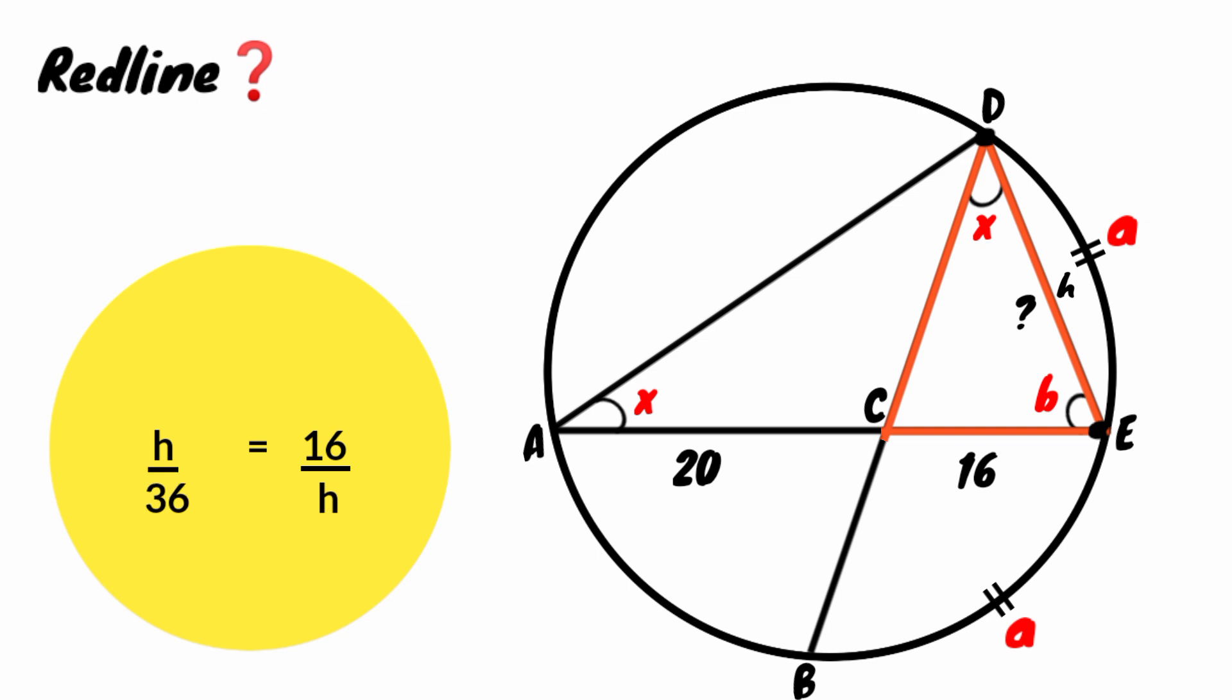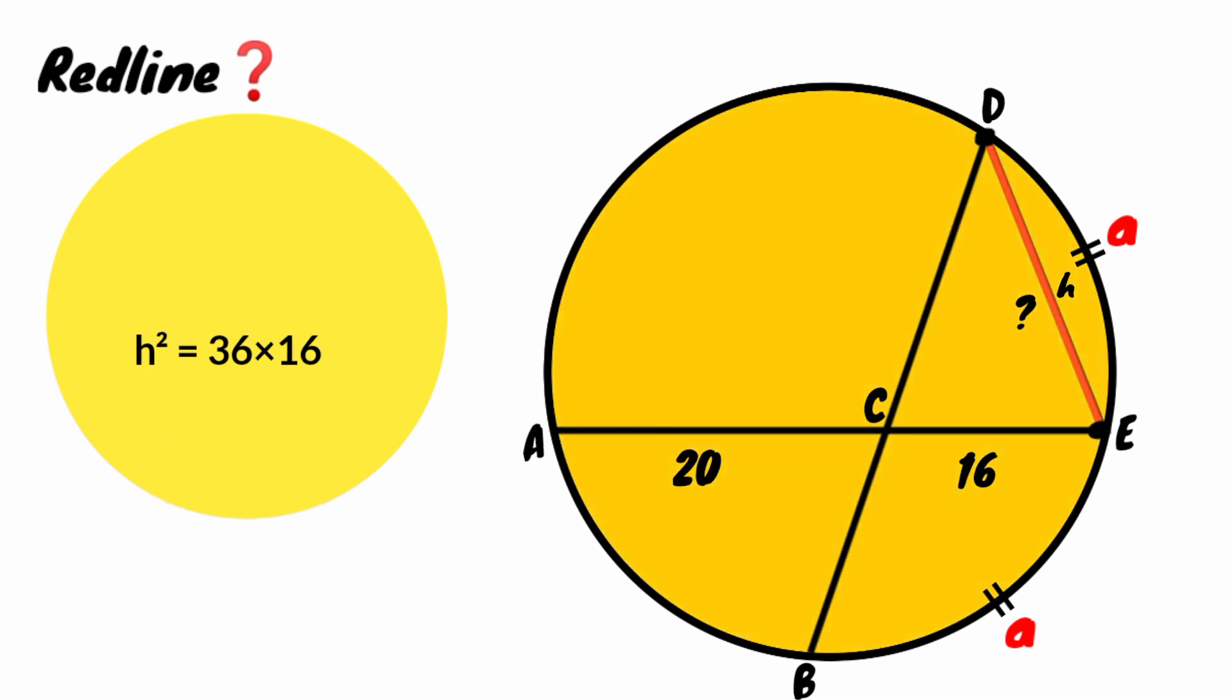Cross multiply: h times h is h squared. 36 times 16 is 576. Take the square root of both sides of the equation.